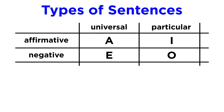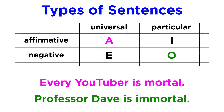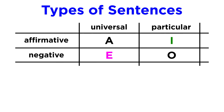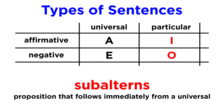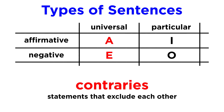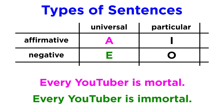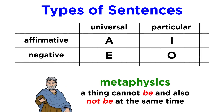These sentences have clear relationships between themselves. For example, A and O would be clear contradictories — as in 'every YouTuber is mortal' versus 'Professor Dave is immortal' — much like E and I. Additionally, I and O are subalterns of A and E respectively, since they only represent a part of their generalized versions. Finally, A and E are contraries, since they exclude each other, as all members of a class either are or are not something. YouTubers cannot be mortal and immortal at the same time. This goes back to another concept in his Metaphysics: that a thing cannot be and also not be at the same time — the principle of non-contradiction.